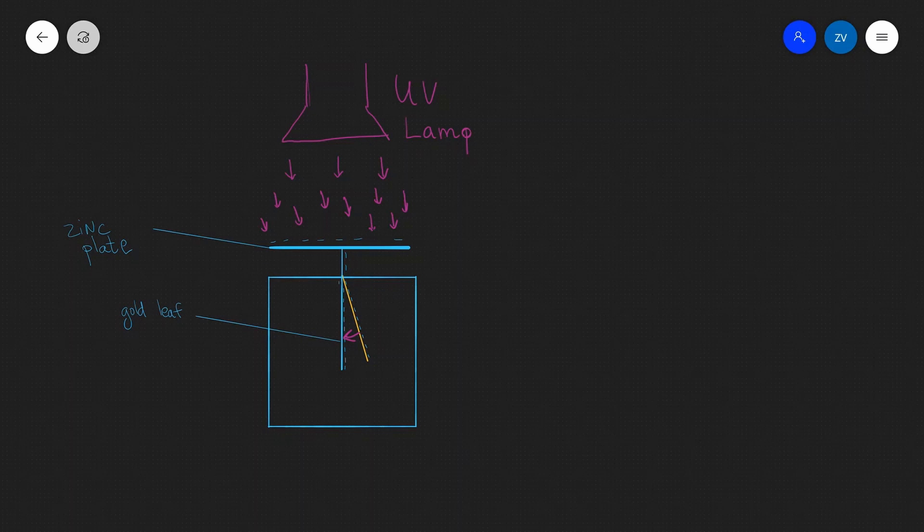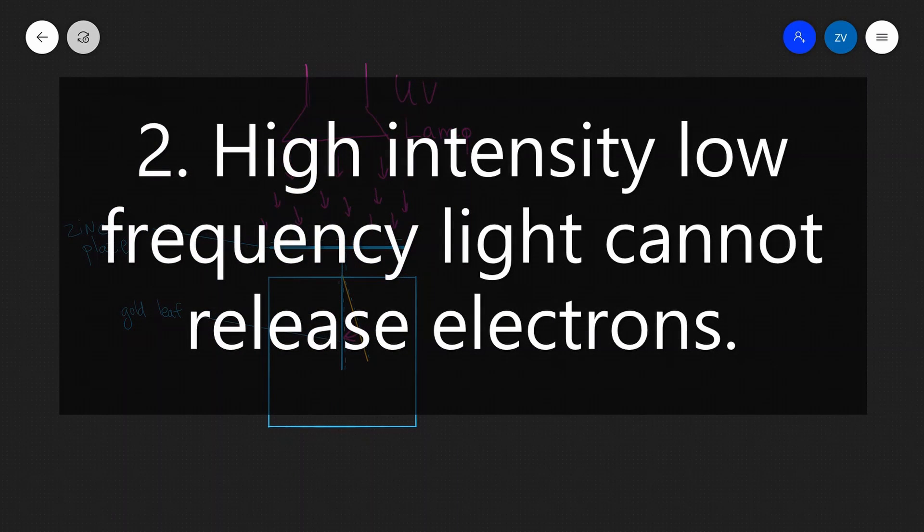Our second finding is that the emission of electrons does not depend on the intensity of the light source. For example, if we had visible light, if we increase the intensity dramatically, we're still not going to get any emission. And this is because there's one to one interaction between photons and electrons.